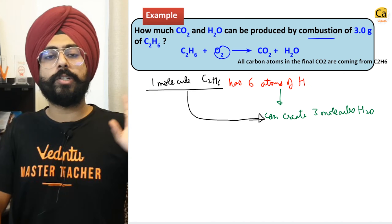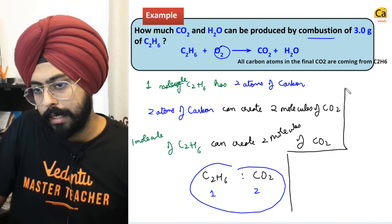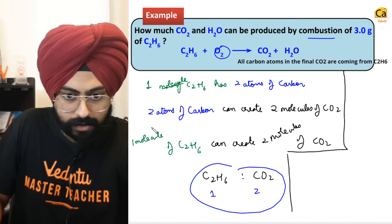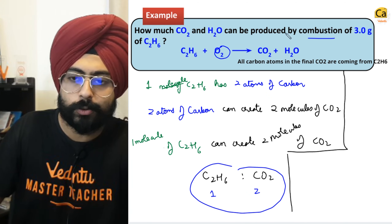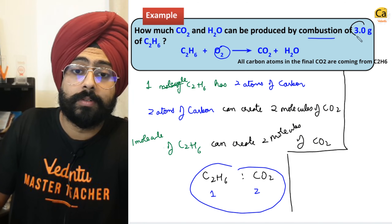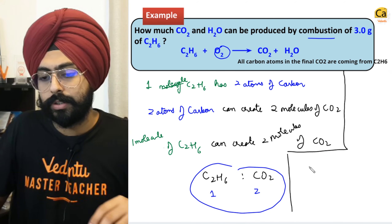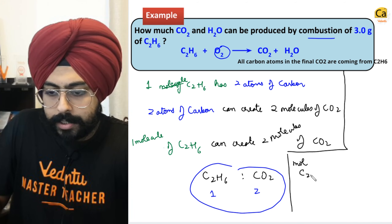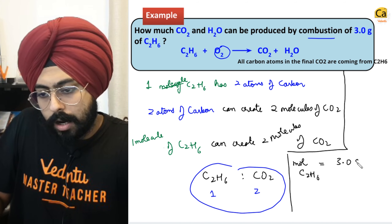Now that we have these ratios, calculations are pretty simple. You have taken 3 grams of C2H6. If I calculate the number of moles of C2H6, I'll be able to calculate the number of molecules of CO2 and H2O respectively. Moles of C2H6 is simply given weight upon molecular weight. Molecular weight: 12 × 2 = 24, plus 6 = 30. This equals 0.1 mole.